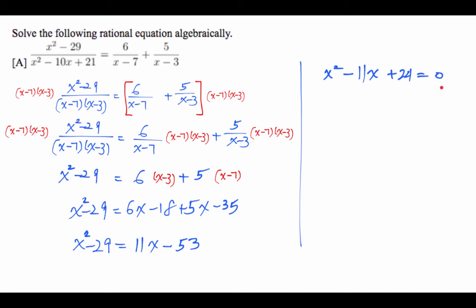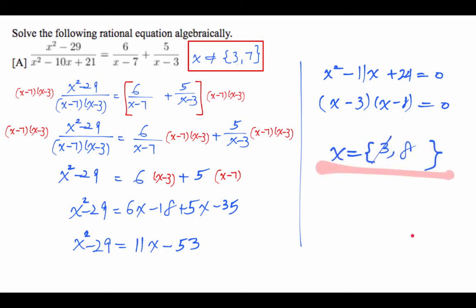If it's factorable, go ahead. If not, use the quadratic formula. In this particular case, it is factorable. So my answer is 3 and 8. But before we get started, we should have made a note of the excluded values, which are 3 and 7. So we know the answer cannot be 3. We cross that out. Therefore the answer is 8.